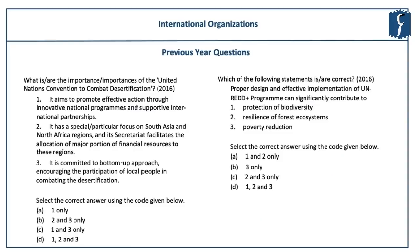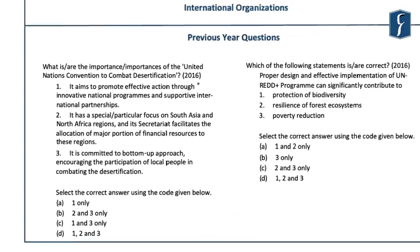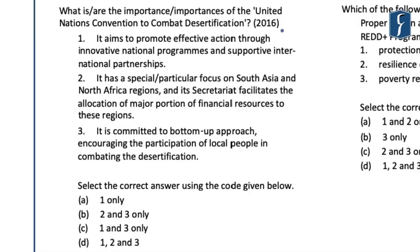The next question is regarding UNCCD or United Nations Convention to Combat Desertification. The question asks: what is the importance of UNCCD? Statement 1: it aims to promote effective action through innovative national programs and supportive international partnerships. Statement 2: it has a particular focus on South Asia and North Africa regions, and its secretariat facilitates the allocation of a major portion of financial resources to these regions. Statement 3: it is committed to a bottom-up approach, encouraging the participation of local people in combating desertification.